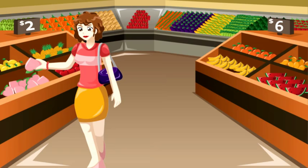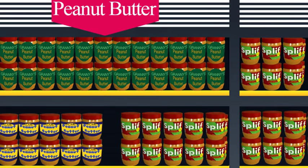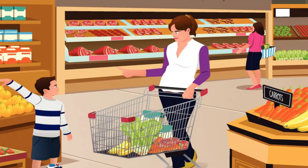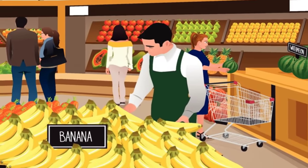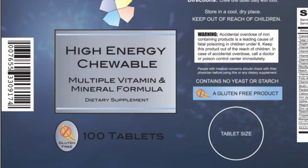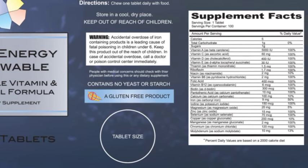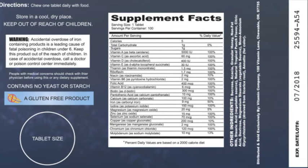Produce is in the produce area, meat is in the meat section, and all of the peanut butter can be found in one place on the right shelves. If a customer can't find something after browsing through the aisles, they need to ask someone who knows where everything is. Each individual product has a label that gives the shopper the information needed to know the price and what they are buying.